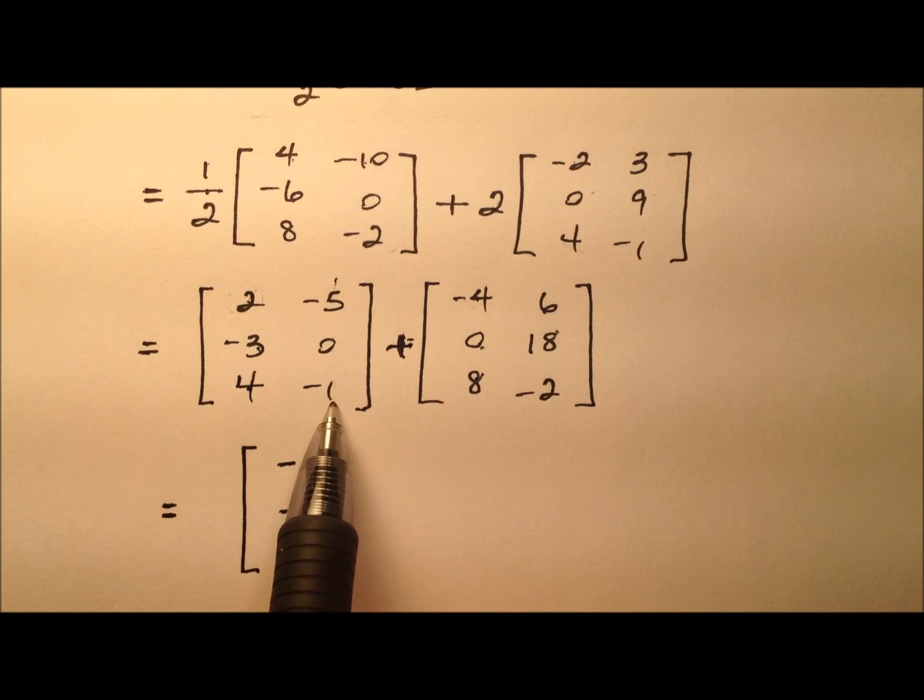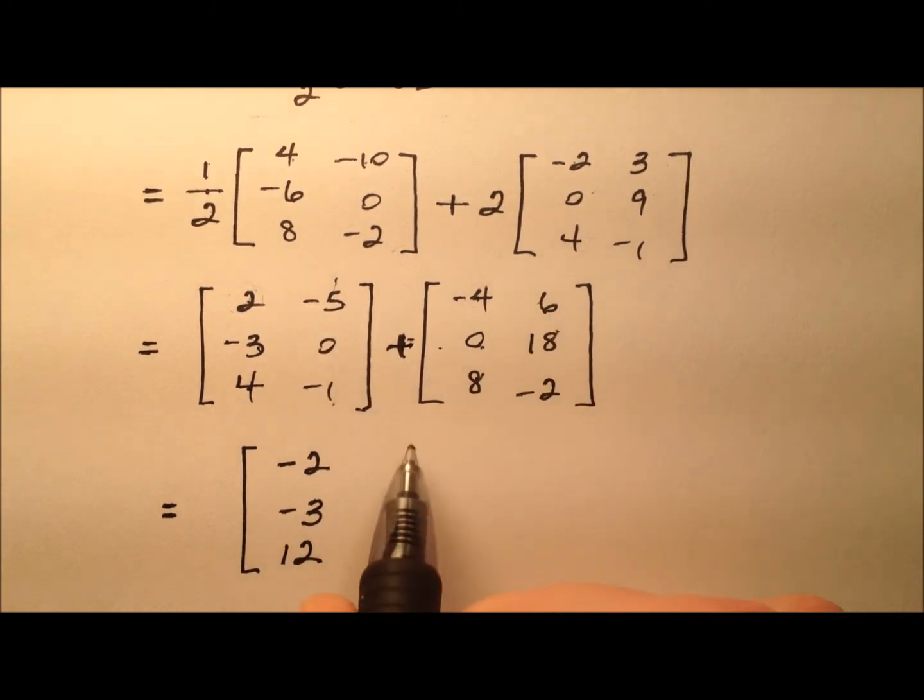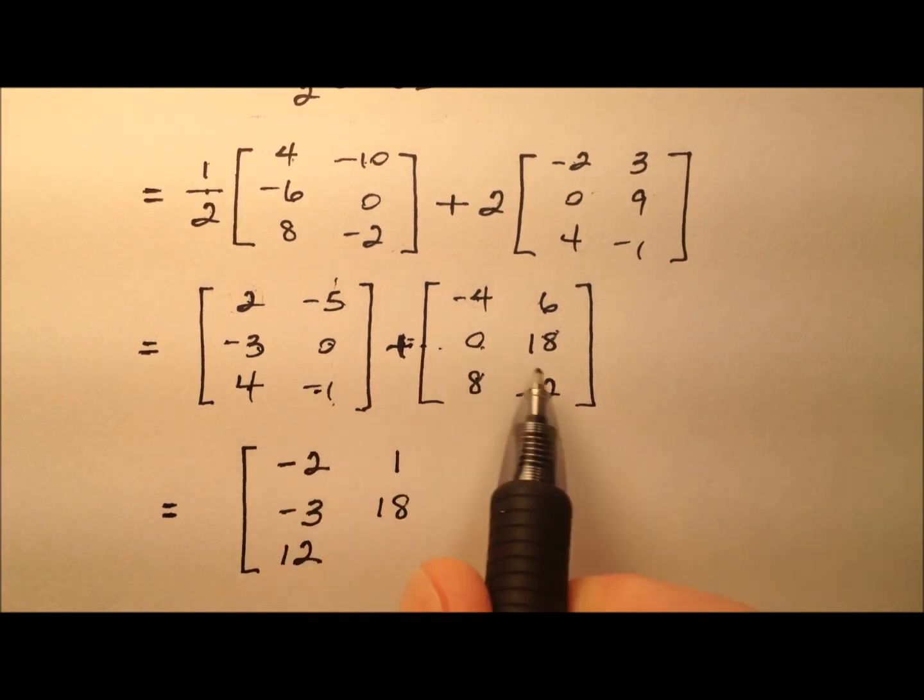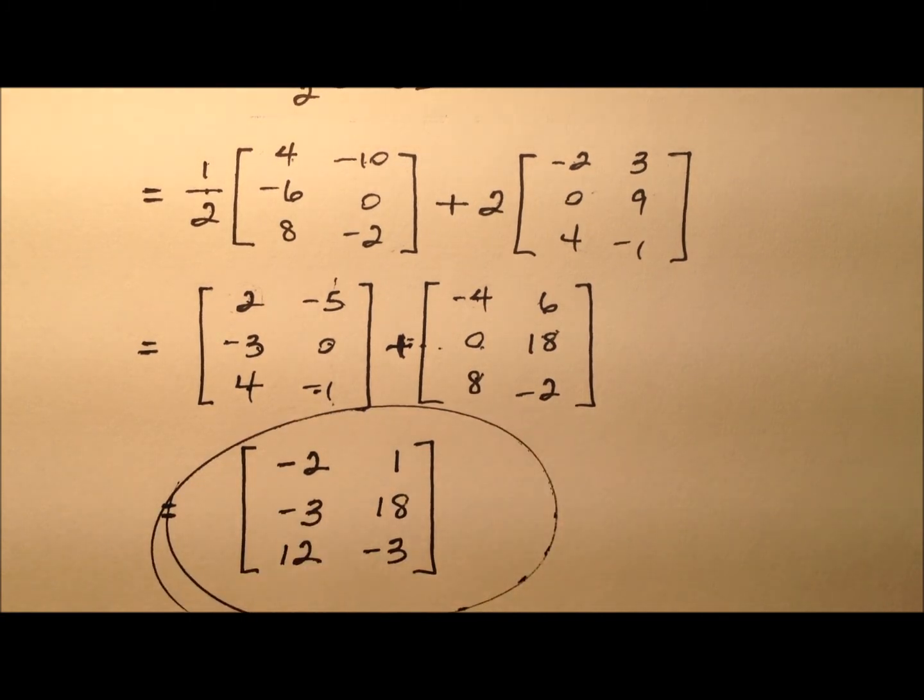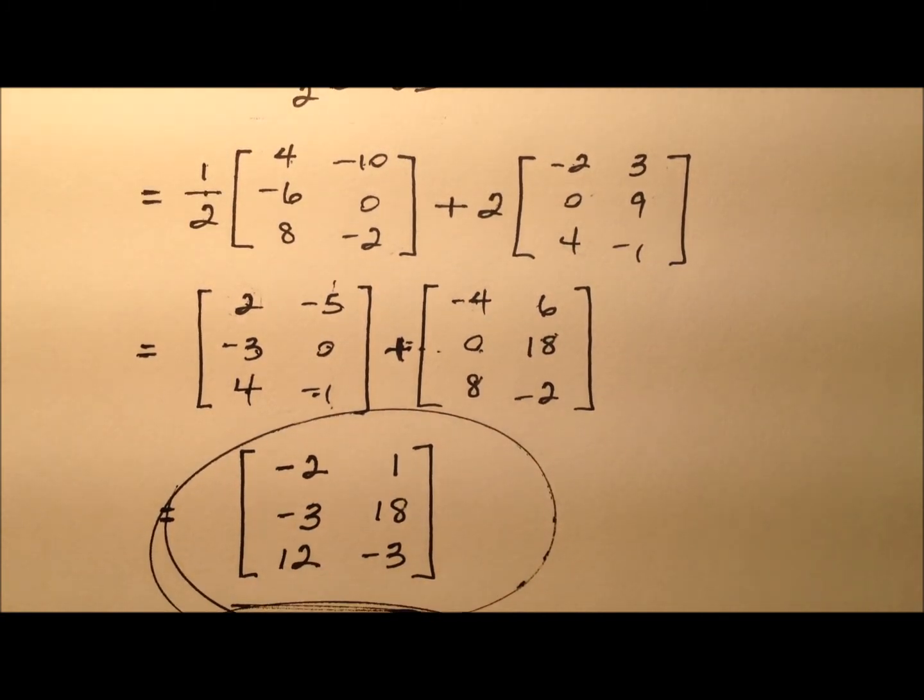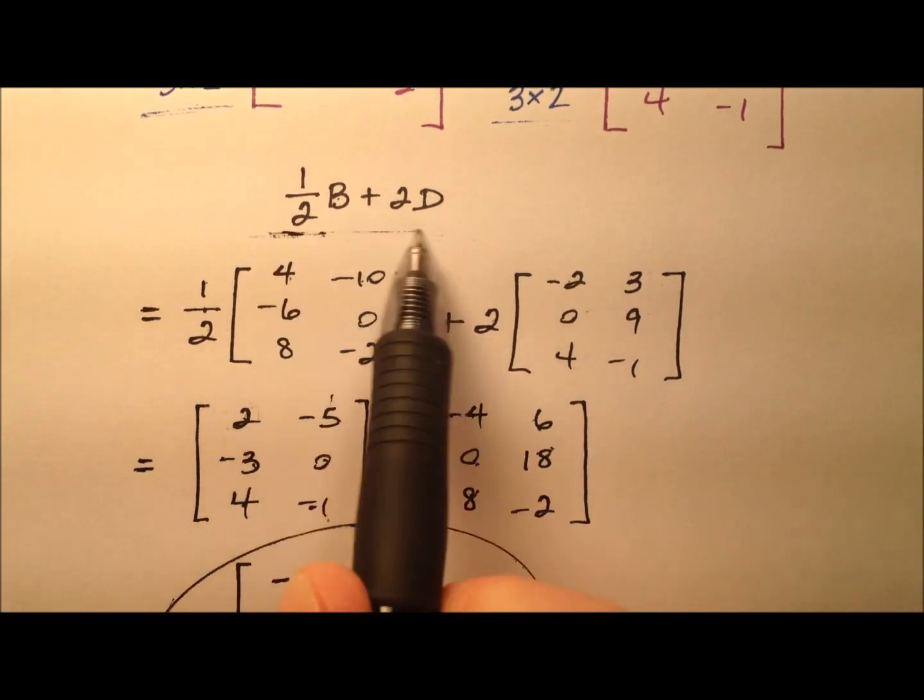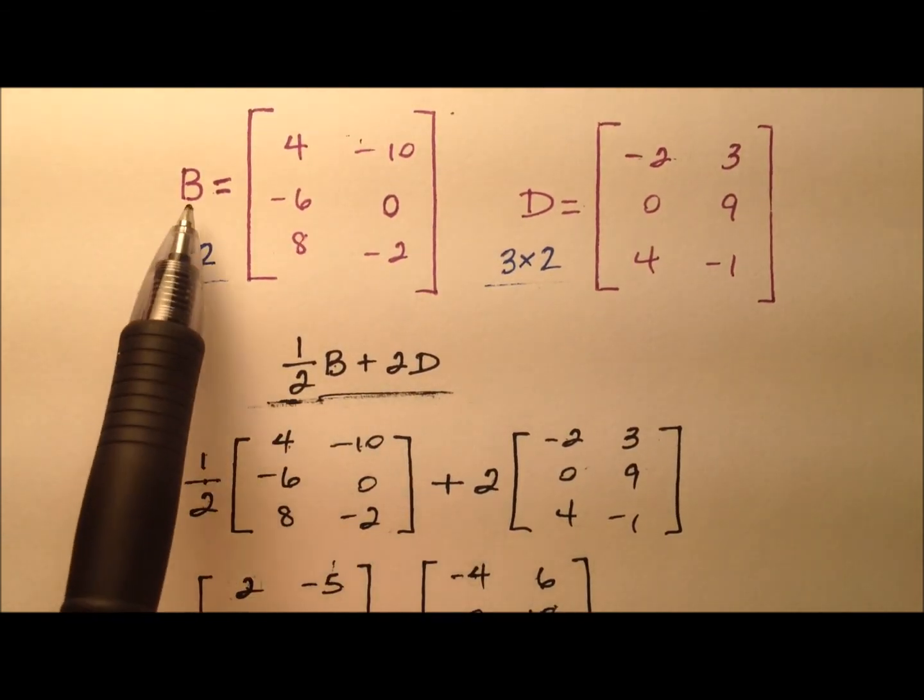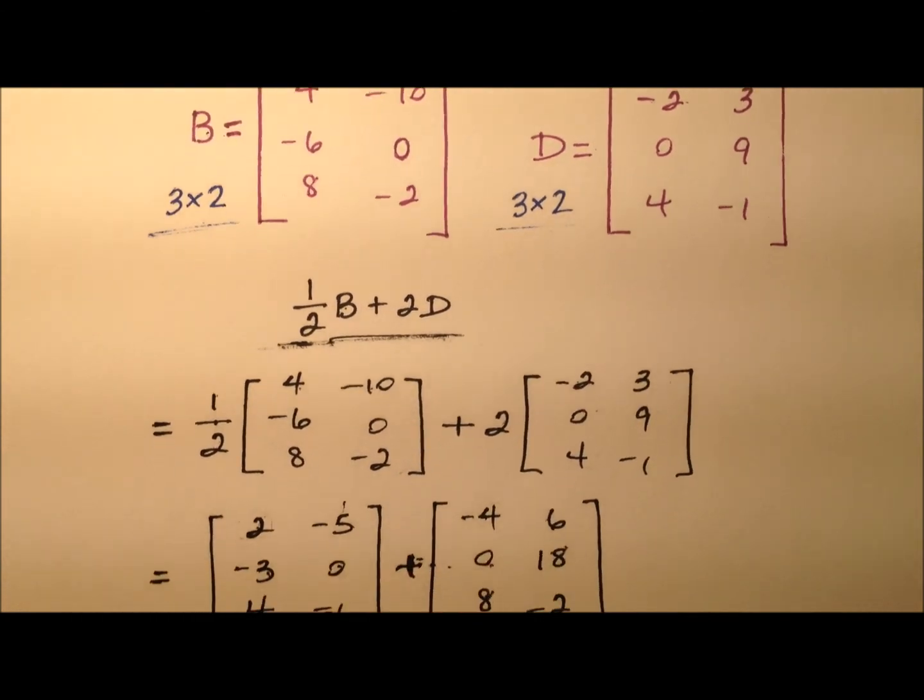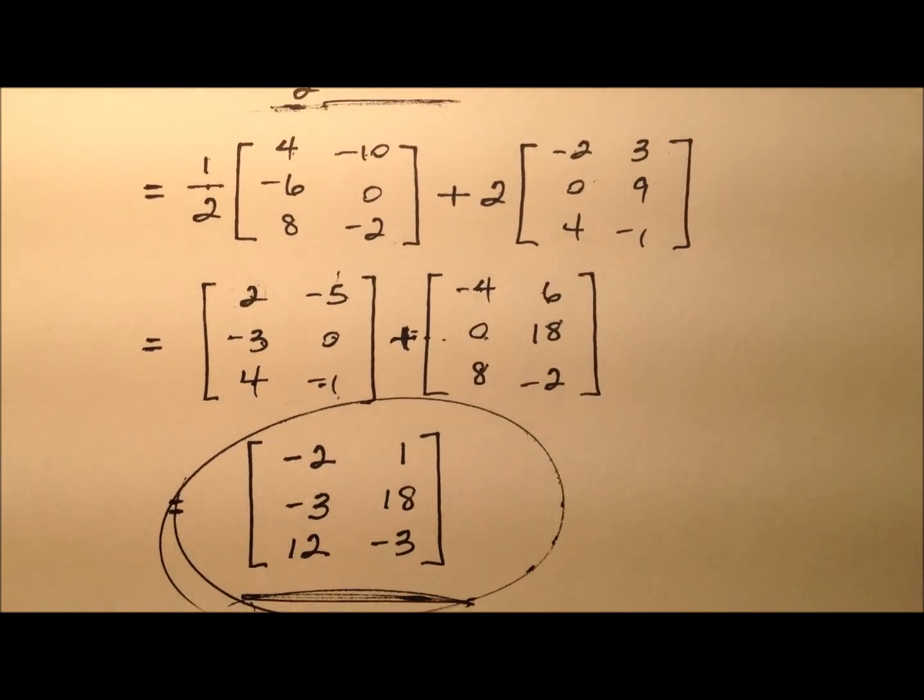Let's go ahead to the second column. So negative 5 plus 6 will be 1, 0 plus 18, and finally negative 1 plus a negative 2. So here then will be this 3 by 2 matrix, which will be the solution when we evaluate this expression given our matrix definition. So matrix B and matrix D. And here, once again, is that answer.